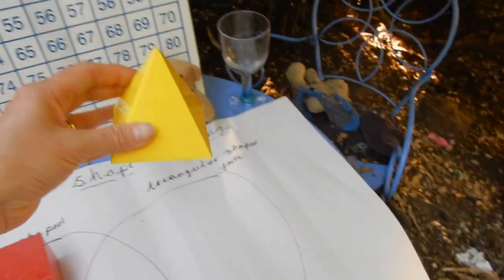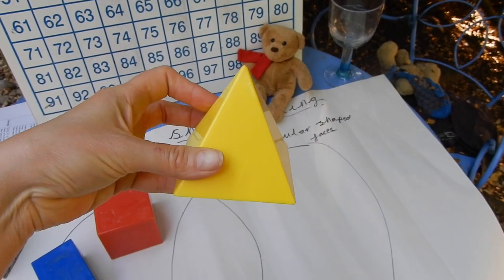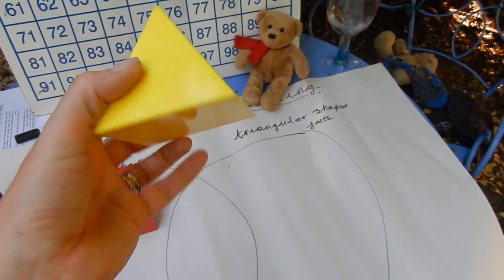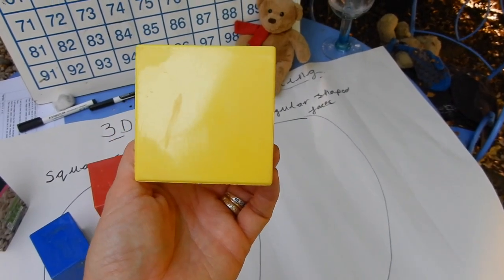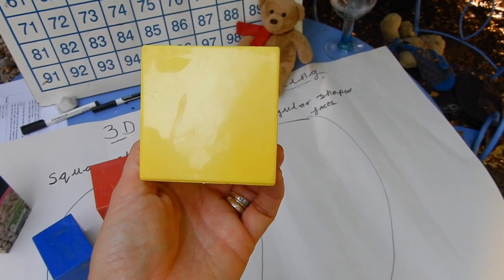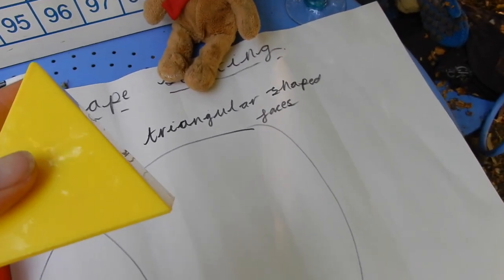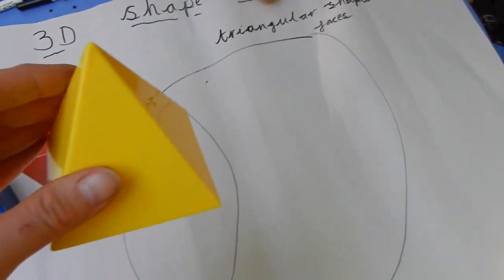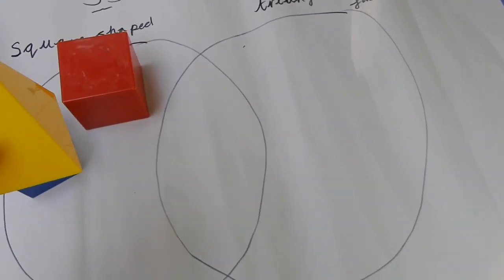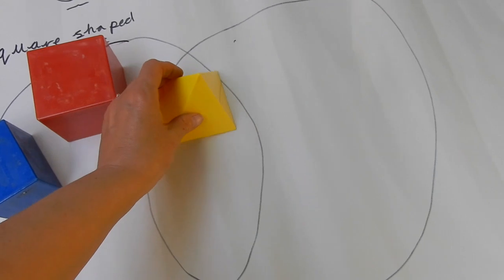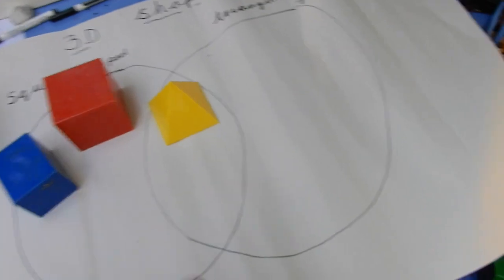We now have a pyramid. What shape are these faces all around the edge? They are triangle shaped — triangular. What about the base? This is a square base pyramid so our base is a square shape. So yes it has square shaped faces, and yes it has triangular shaped faces. So where would we put our square base pyramid? We would put it in the middle where both sorting hoops overlap, because it has a bit of both of our sorting criteria.